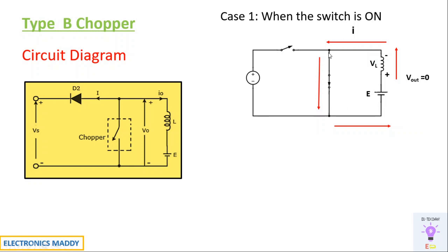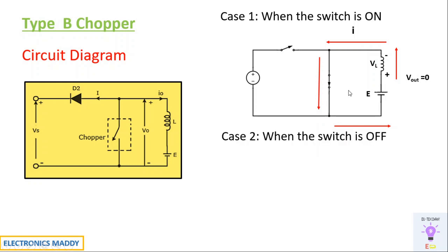Consequently, Vout will be equal to zero. If you take a multimeter and measure the voltage across the load terminals it will be equal to zero, because this acts as a redundant network at that point — there is a short circuit, and whenever a short circuit is present the output voltage across the load terminals equals zero.